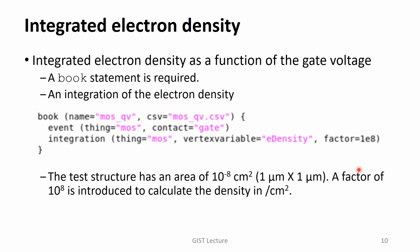Our goal today is to draw the integrated electron density as a function of the gate voltage. So, we must calculate an integration of the electron density at every gate voltage. For that purpose, a book statement is required. As you can see here, with this line, an integration is calculated and written in the output csv file.